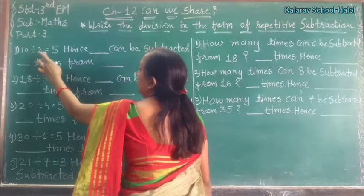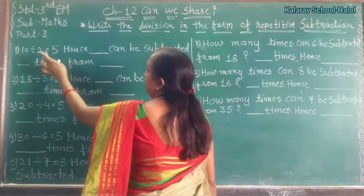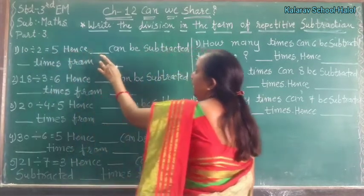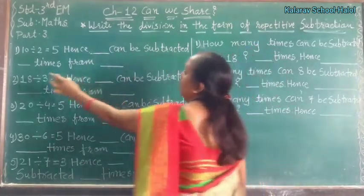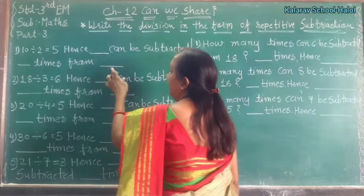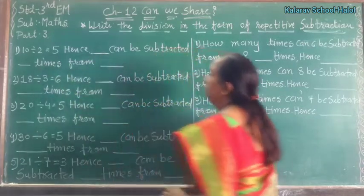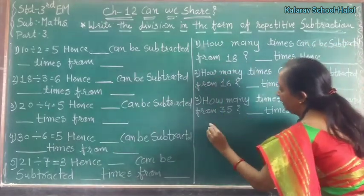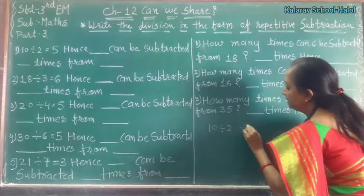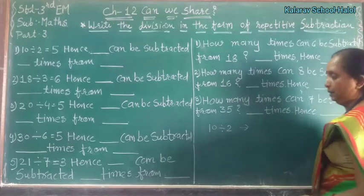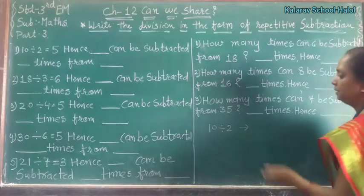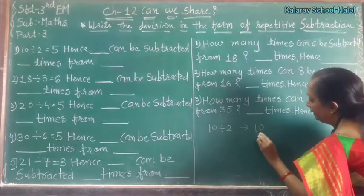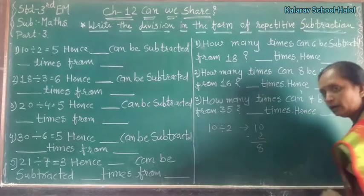10 divided by 2 is equal to 5. Answer: 5. Now, blank can be subtracted blank times from blank — we will fill the blanks. First of all, how to do 10 divided by 2? If we do this, we will subtract 2 from 10. So first: 10 minus 2, answer is 8.